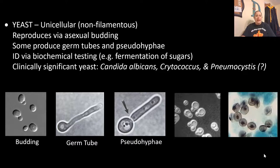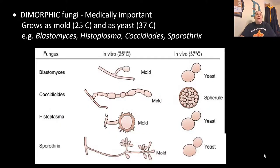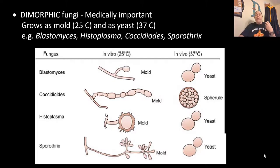In pictures you can see budding, germ tubes, and pseudo-hyphae, and negative staining can also be used. Dimorphic fungi have high medical importance — they can grow as a mold with hyphae and filaments at 25°C, but they can also grow like a yeast at 37°C. They are called dimorphic because they can go back and forth between forms. Examples include Blastomyces, Histoplasma, Coccidioides, and Sporothrix.